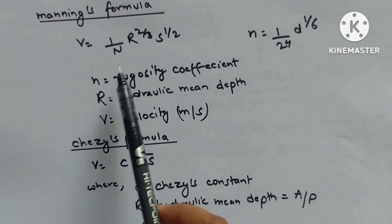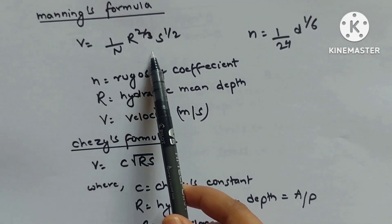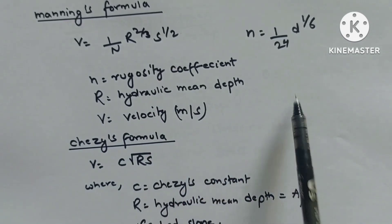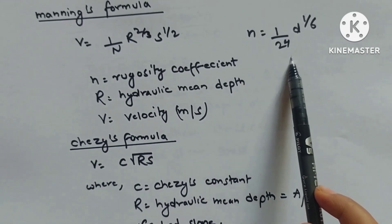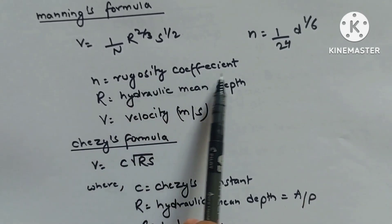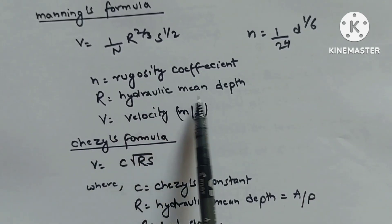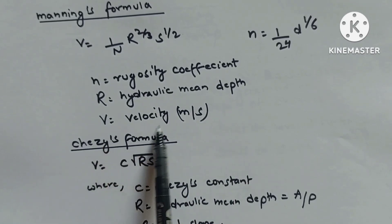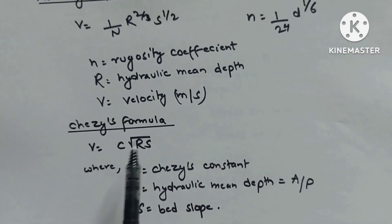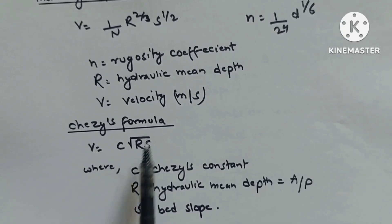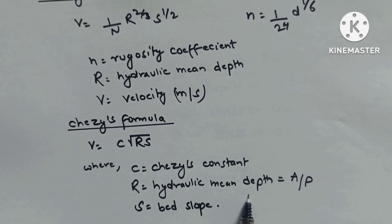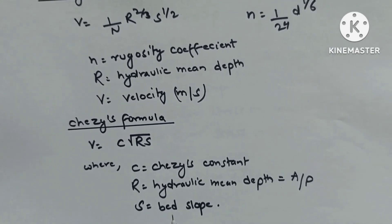Manning's formula: V = (1/n)R^(2/3)S^(1/2), where n = (1/24)D^(1/6), n is roughness coefficient, R is hydraulic mean depth, V is velocity in m/s. Chezy's formula: V = C√(RS), where C is constant, R is hydraulic mean depth, S is bed slope.